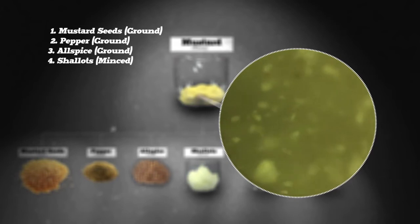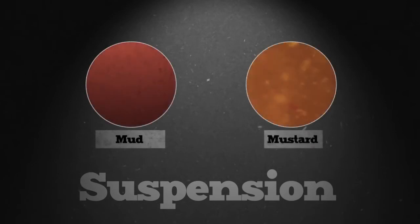pepper, allspice, and minced shallots all floating around in a liquid. In this case, vinegar and water. This is called a suspension because you've got particles of one thing suspended in another.